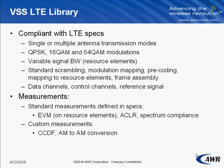The LTE library is implemented according to the LTE specifications. The LTE signal sources can operate using single or multiple antenna transmission modes, QPSK, 16QAM, and 64QAM modulations, variable signal bandwidth defined in resource elements, standard scrambling, modulation mapping, pre-coding, mapping to resource elements, frame assembly, data channels, control channels, and reference signals. The VSS LTE library also provides receiver functionality for demodulating the input signal and extracting various data and control channels, and performing standard measurements defined in the LTE specifications.